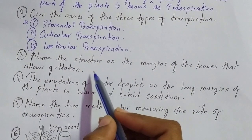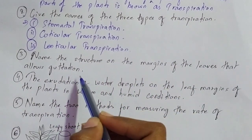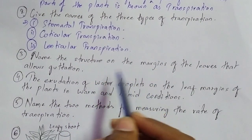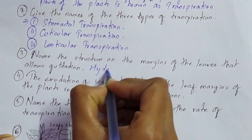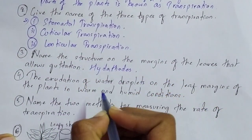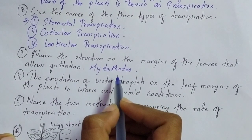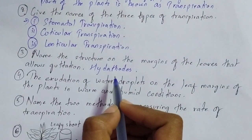Question number three: name the structure on the margins of the leaves that allows guttation. The other name of guttation is exudation. The structures are known as hydathodes. You must keep this in mind — most of the time this question is repeated. It is asked in your MCQ type questions, short questions, name-the-following type questions, or MCQ questions.